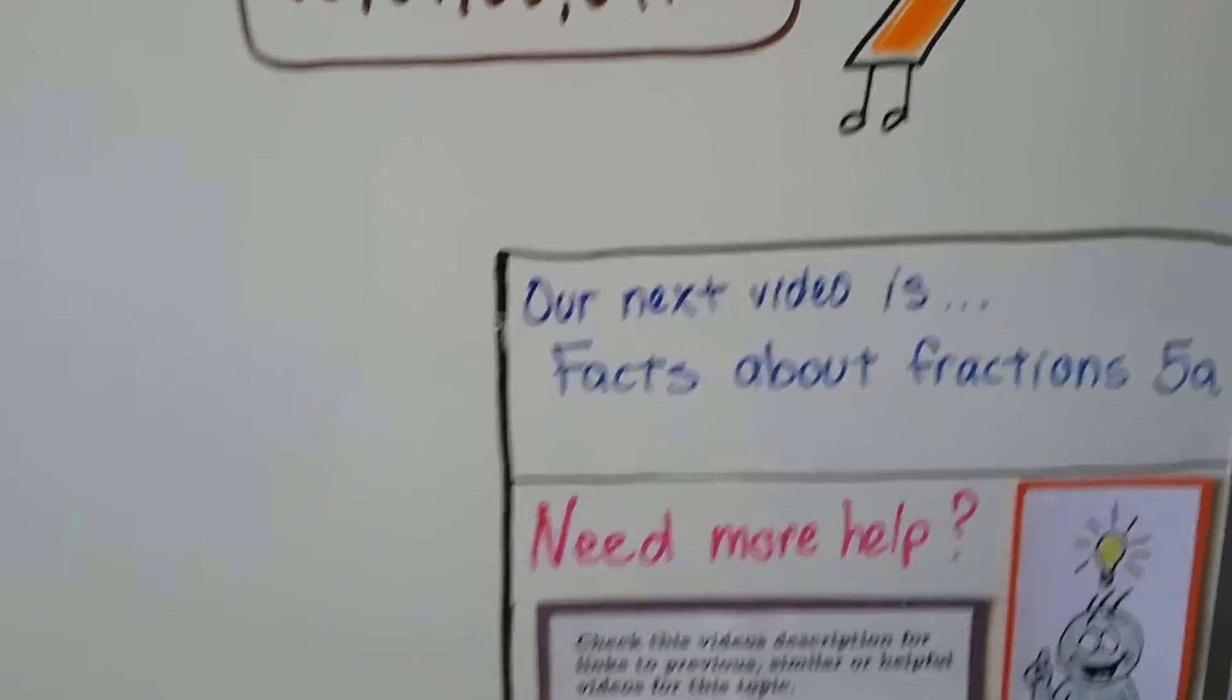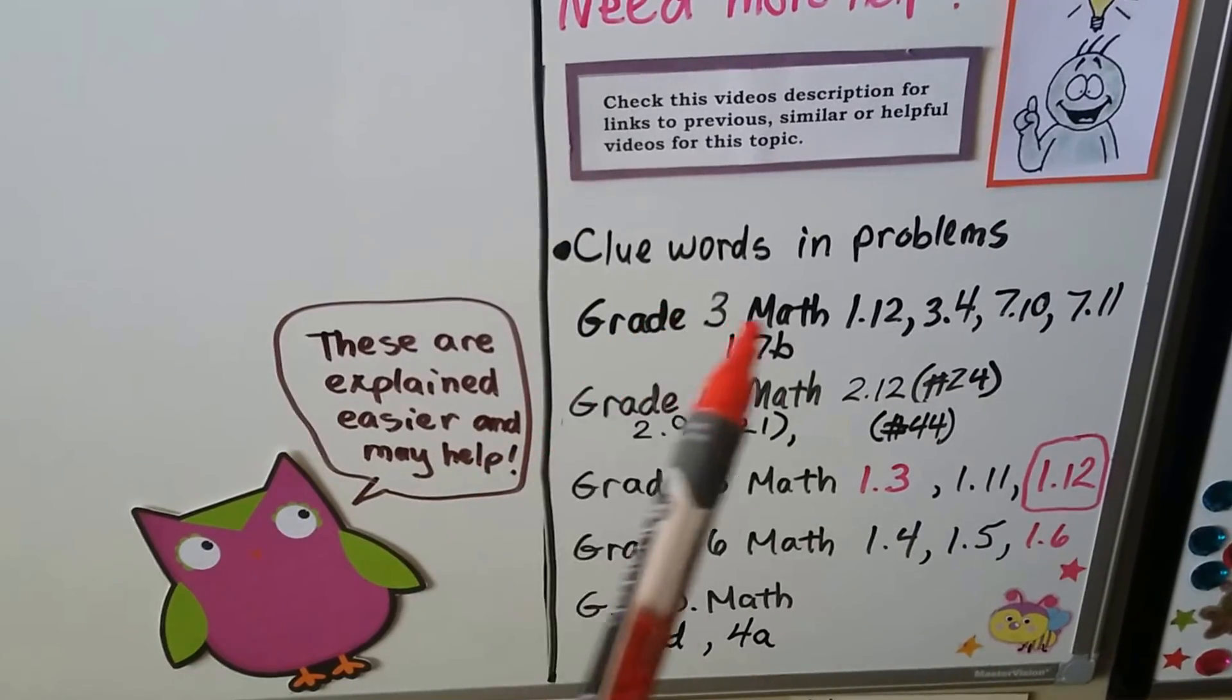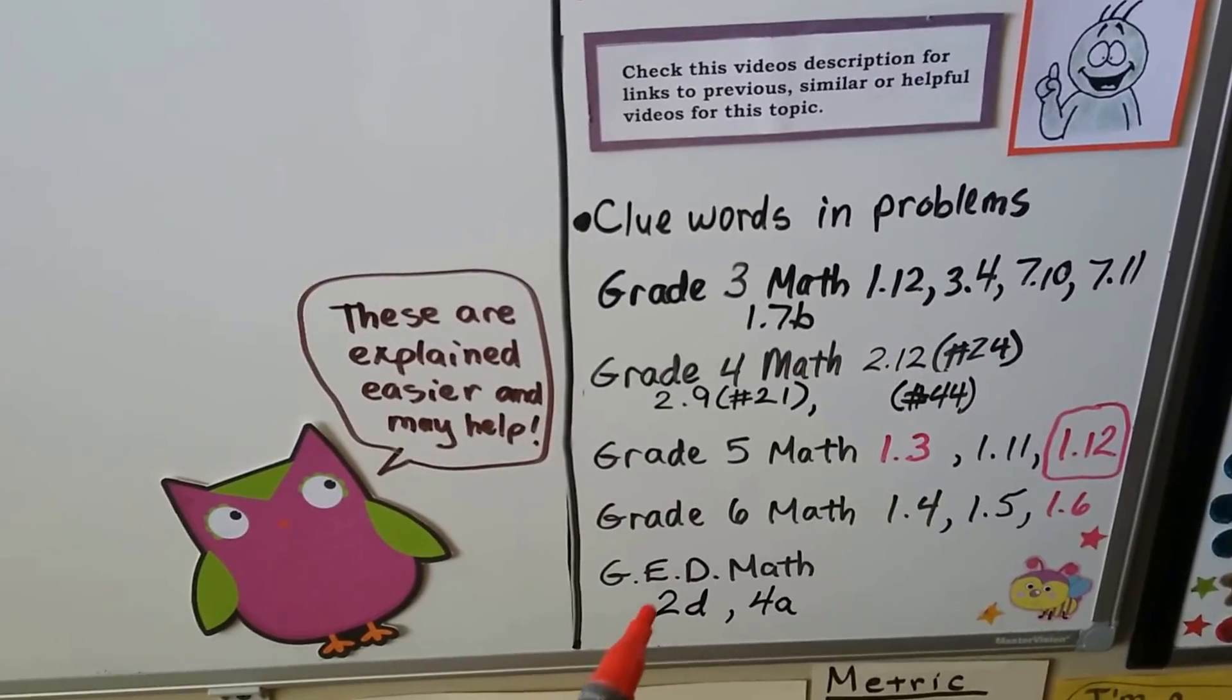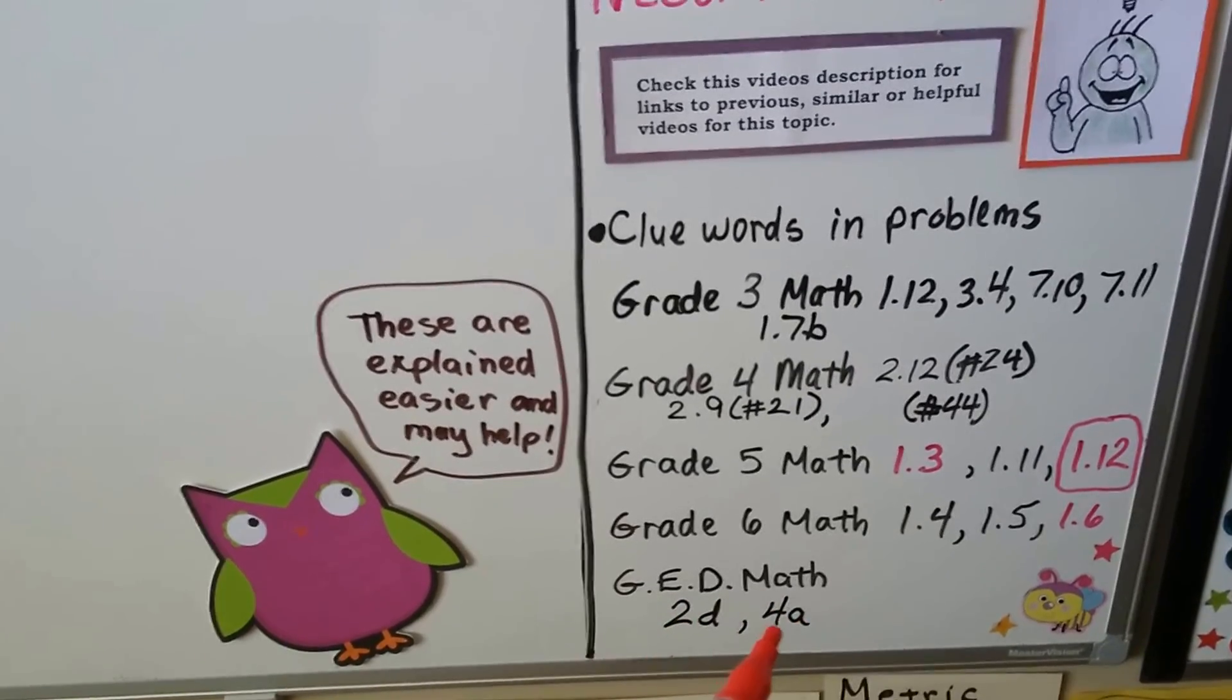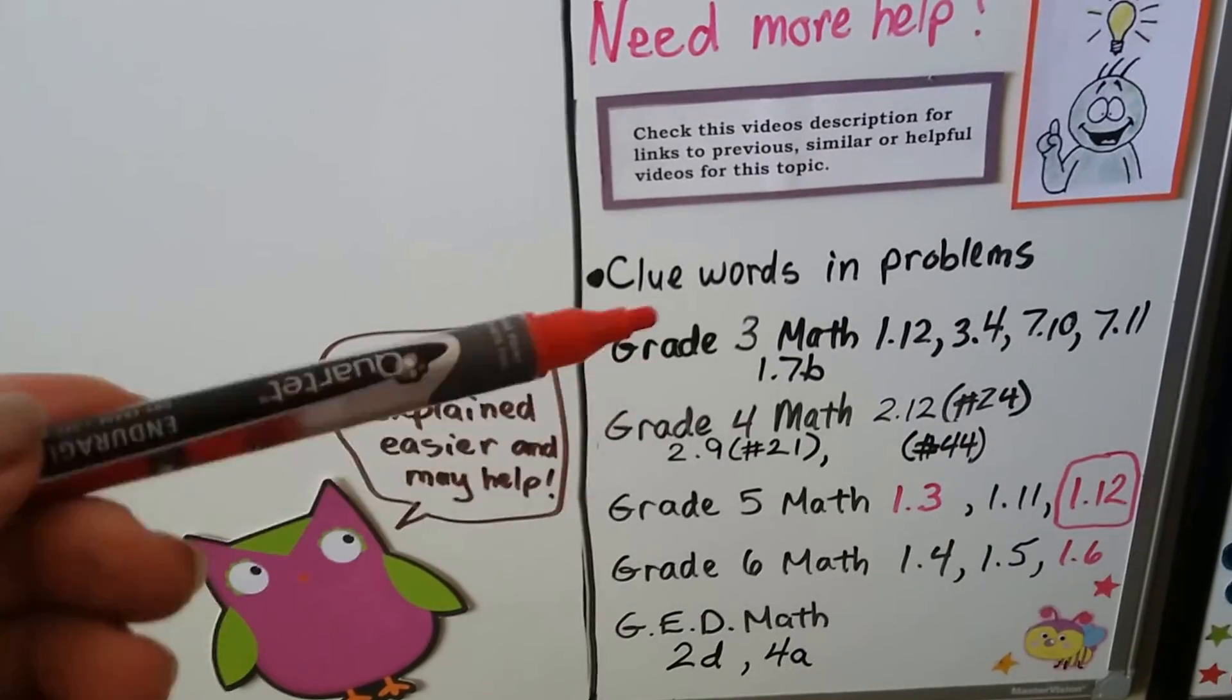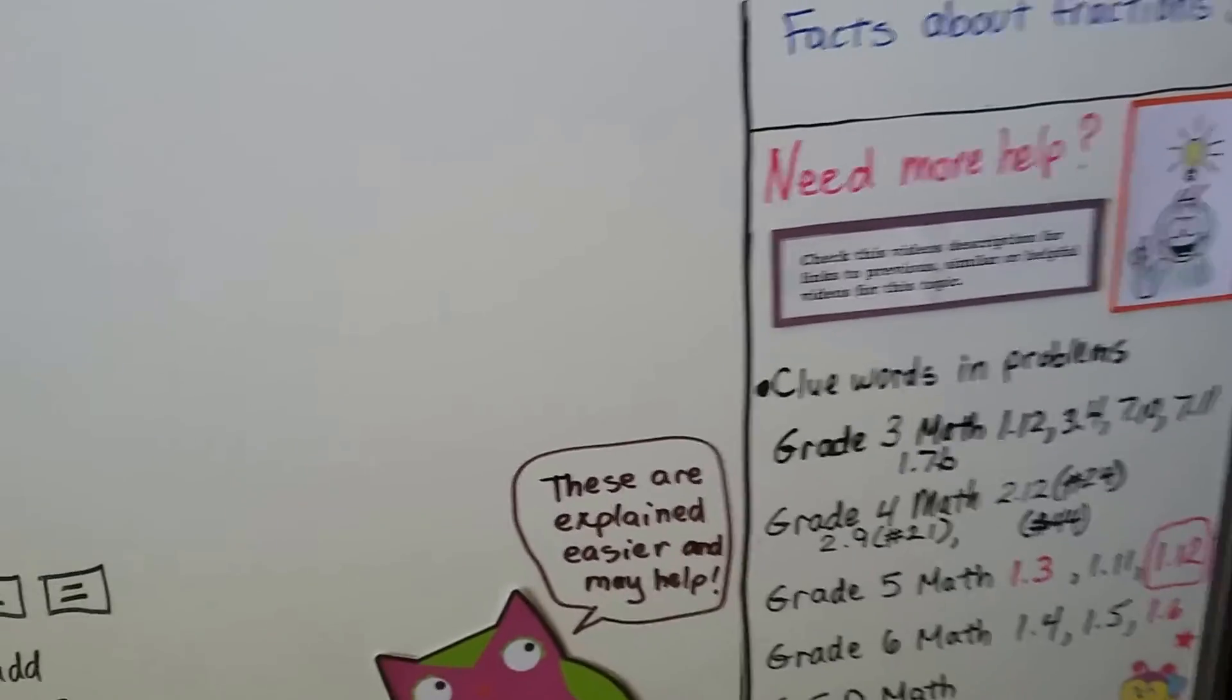And if you need more help, I have a video called Clue Words in Problems, and that'll tell you what operation to use. We're going to have several grade 3 math videos, 3 grade 4 math videos, some grade 5 and grade 6, and there's going to be links to the GED math videos for 2D and 4A where we talked about multi-step problems and order of operations. And know in your heart that these lower grade videos are explained a lot more basic and a lot more easier. So if you're really having trouble, start here and move on to these until you completely understand before moving on to the next lesson.